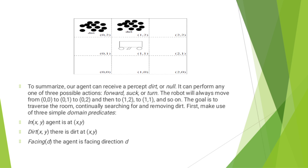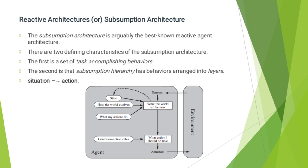The robot will always move from position (0,0), then (0,1), (0,2), then (1,2), then (1,1). The goal is to traverse the room continuously, searching and removing dirt. The predicates are: In(x, y) — agent is at position (x, y); Dirt(x, y) — there is dirt at (x, y); Facing(D) — the agent's facing direction is D.